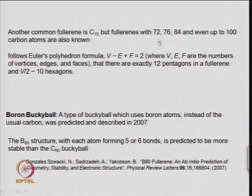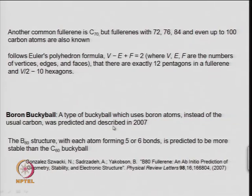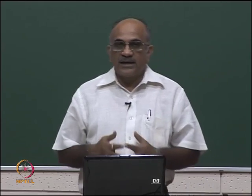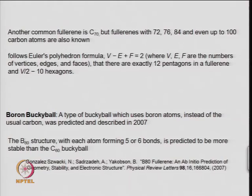You can have a large variety of fullerenes, all related through hexagons and pentagons of carbon. Recently in 2007, instead of carbon, boron at the vertices has also been created to form a buckyball-like structure. The formula obtained is B80, with each boron forming 5 or 6 bonds, and it is predicted to be more stable than C60. This boron buckyball has not been isolated; it has been predicted theoretically, and there are many new things related to fullerenes still under research.